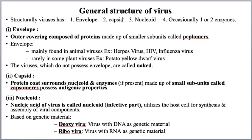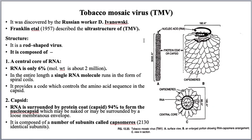Now let us take some important examples of viruses. The first example is tobacco mosaic virus, simply called TMV. I already told you it was discovered by Ivanovsky, and Franklin is the scientist who gave the ultra structure — the structure observed using an electron microscope.